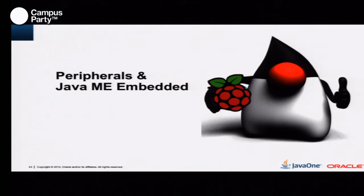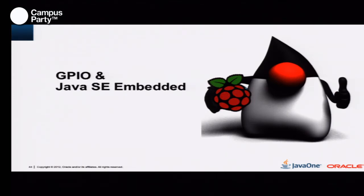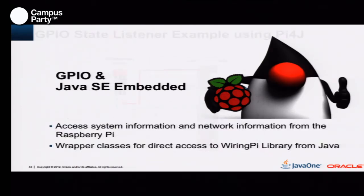Now, how do peripherals work with Java ME Embedded? We have the Device Access API. Let's look at some code — I need to show you how things actually work.